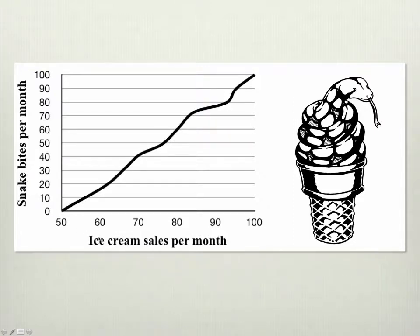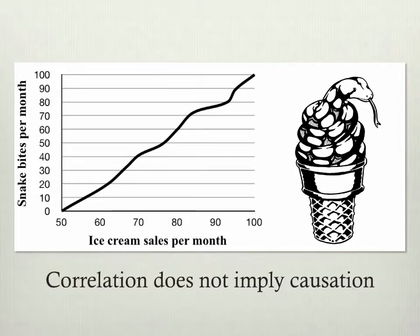This will not always be this obvious. Sometimes you won't be able to tell by looking at the variables. The point is, you can't know. The principle that this demonstrates is something they drill into your head in research methods classes, which is that correlation does not imply causation. In other words, if you have a correlation between two things, the one might be causing the other — even here, it is possible that buying an ice cream causes you to get bitten by a snake, although that's quite ridiculous — but it does not mean that.